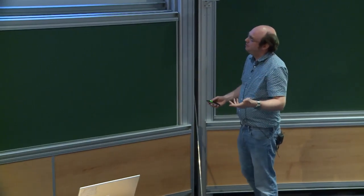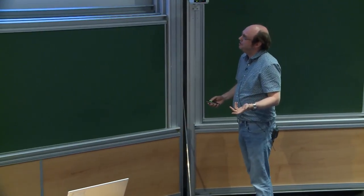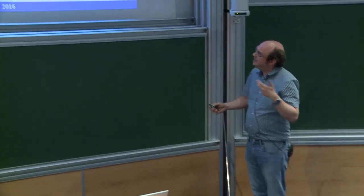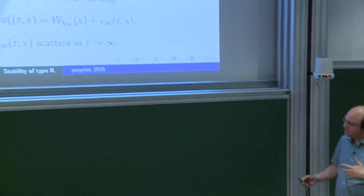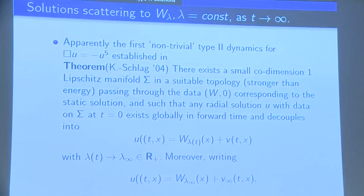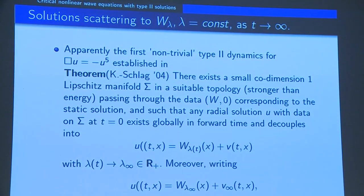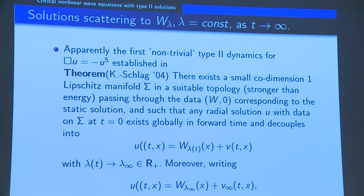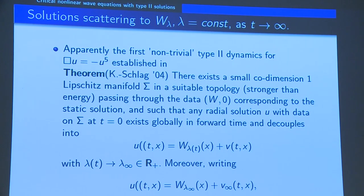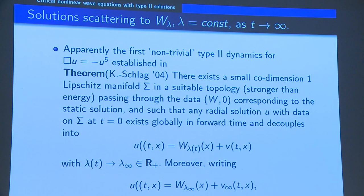Let's go back to some very primitive origins. The first time I learned about this equation was around 2004, well before the Duyckaerts-Kenig-Merle program. At the time, not very much was known about this equation. People knew the small-data theory, people knew about the ODE blow-up, and there were some numerical results.